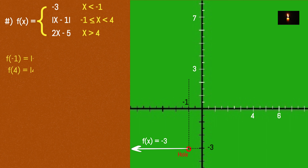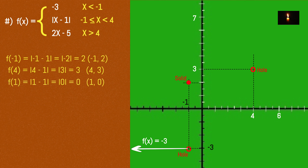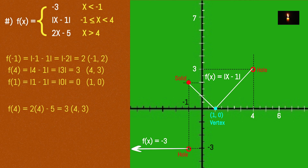The coordinates: at x = -1, the value is 2, so coordinates are (-1, 2). At x = 4, value is 3, so coordinates are (4, 3). The absolute function has vertex at x = 1, giving vertex (1, 0). The linear function piece is y = 2x - 5, and the point (4, 3) is on all relevant pieces.